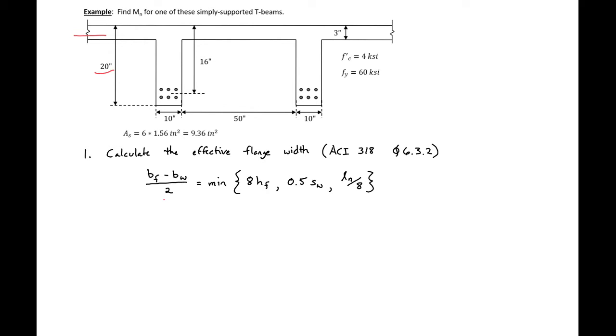We have a web width of 10 inches, space or distance between inside of webs as 50 inches, and depth from the top of the section to the centroid of our steel 16 inches. We have six number 11 bars to give us a total overall area of steel in one beam of 9.36 square inches, 4 KSI concrete and 60 KSI steel.